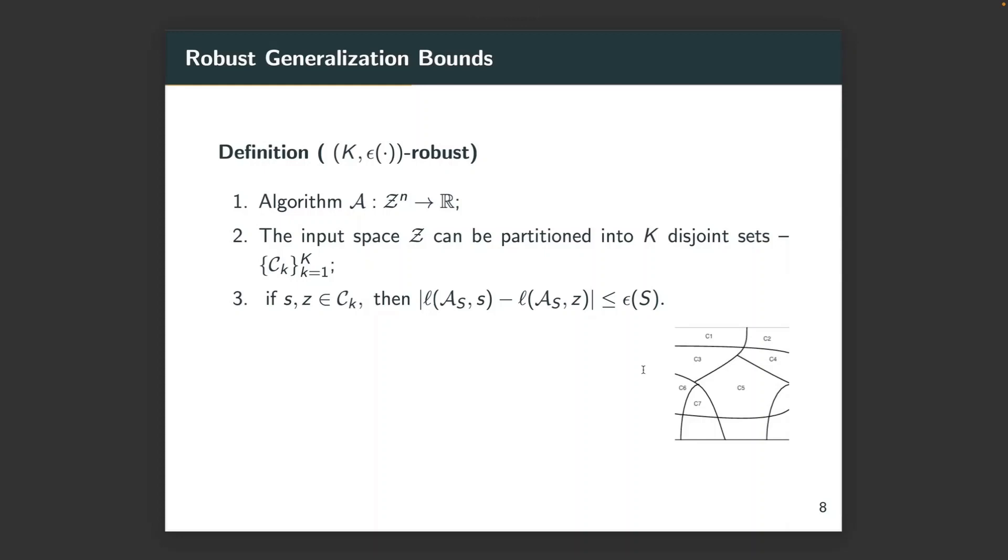In this paper, we will focus on the robust generalization bounds. Specifically, a learning algorithm is K-epsilon robust if the input space can be partitioned into K disjoint sets, denoted by C_K, such that for any S, Z belongs to the training dataset, if S, Z belongs to the same partition C_K, then the gap between the losses evaluated on S and Z can be bounded by epsilon. This is very interesting, since robust optimization is an influential paradigm for dealing with noisy or uncertain data. Moreover, a robust algorithm can be non-stable. Thus, robust generalization provides a new approach to derive generalization bounds.